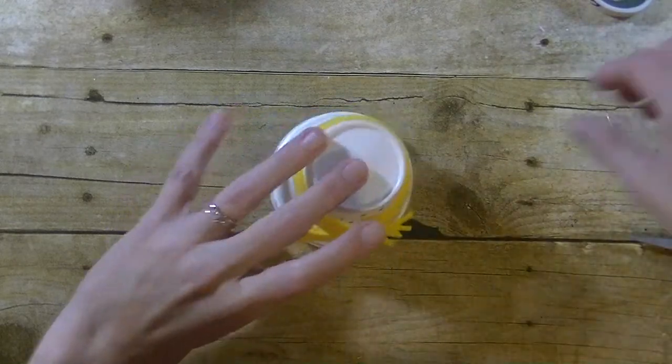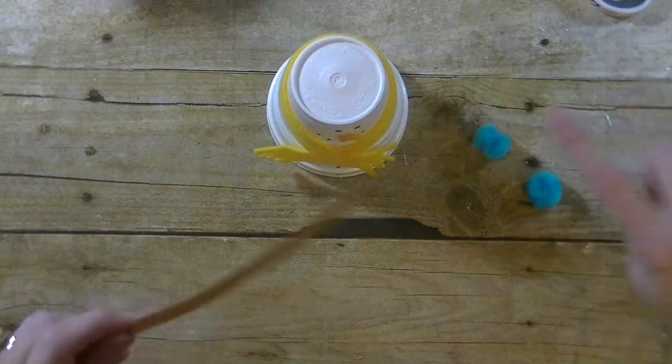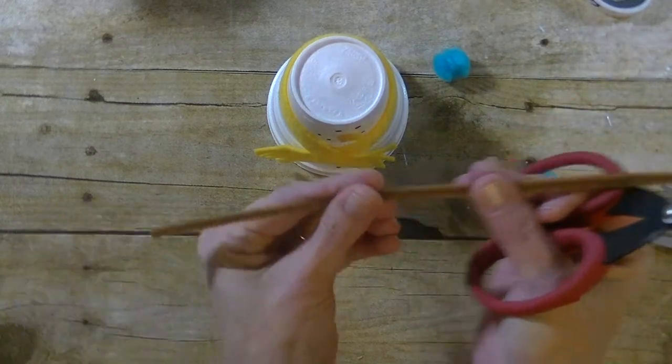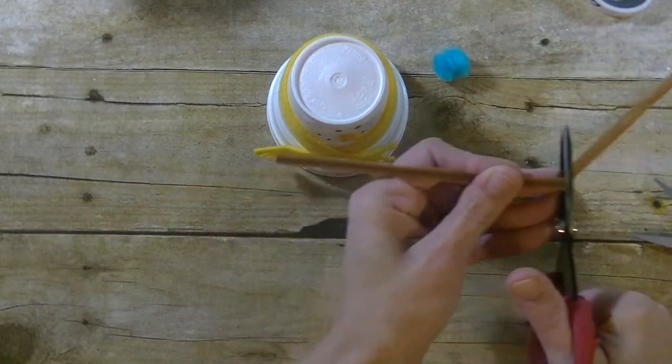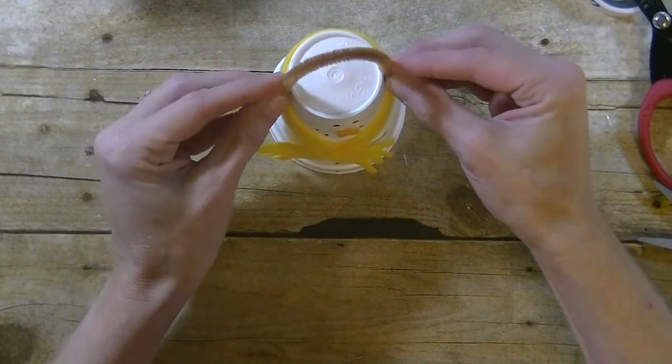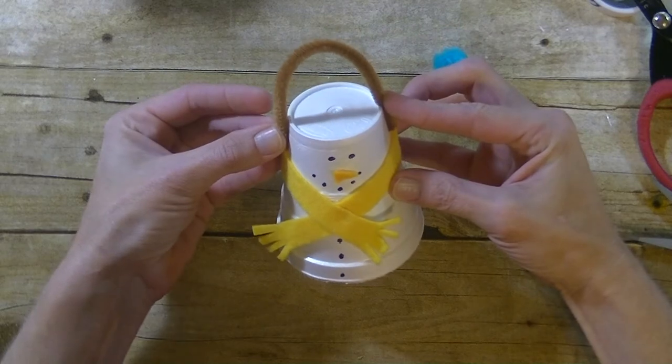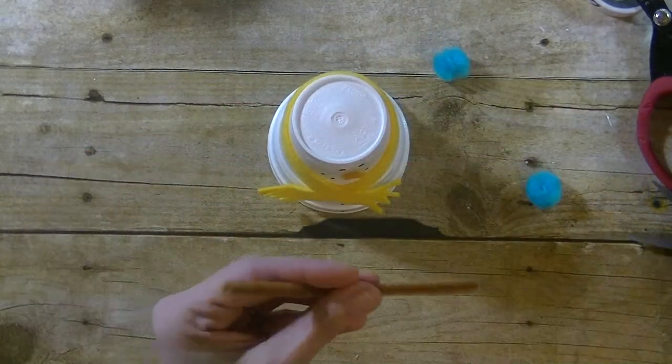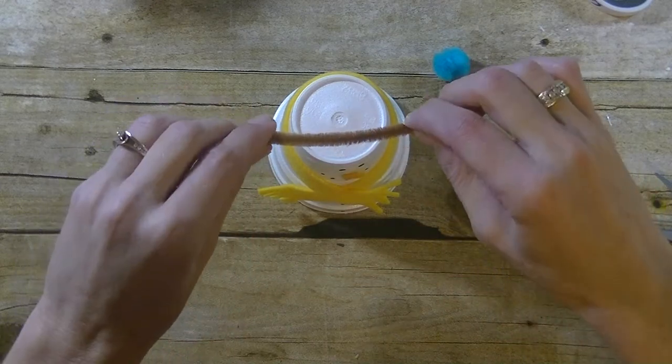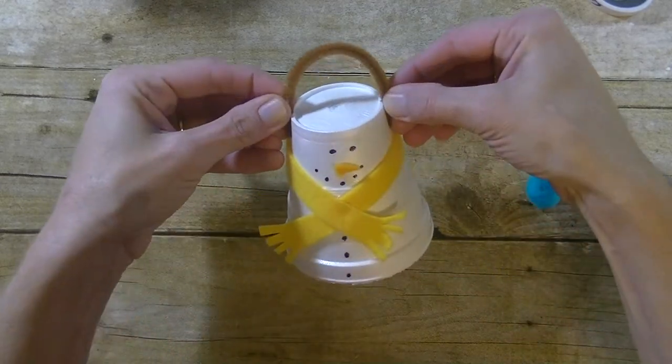Alright, so we have that done. Let's go ahead and work on the earmuffs. I have my blue pom-poms there, taking a brown pipe cleaner. I'm going to first try cutting in half and seeing how that looks, just kind of make a little arch. I think I can go a tad bit smaller.